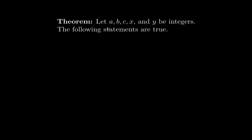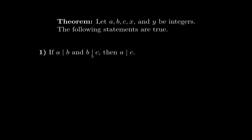So let's look at the statement for the theorem. We have a, b, c, x, and y as integers. The first statement is: if a divides b and b divides c, then a divides c. You can think of this as transitivity. So you can basically skip the b and use transitivity to confirm that a divides c.